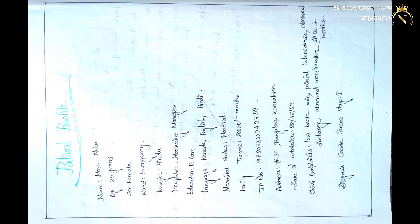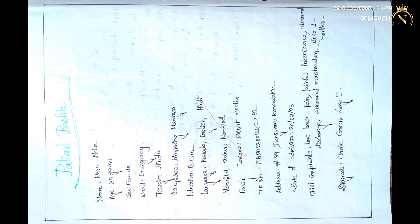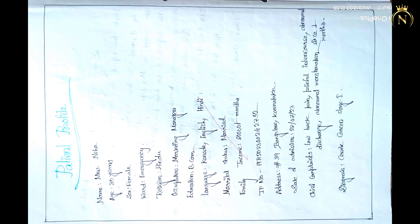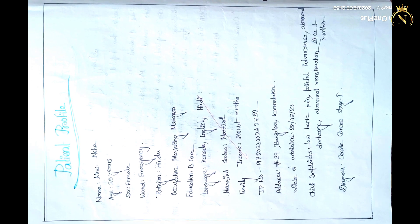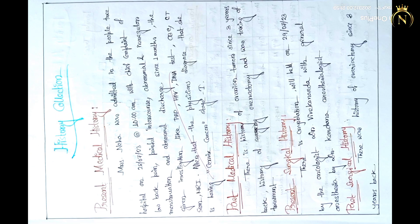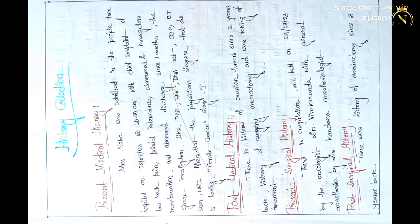First you have to write the introduction regarding the disease condition or patient condition. After that you have to write the patient profile - patient name, age, chief complaint, diagnosis, each and everything you have to mention the history collection.